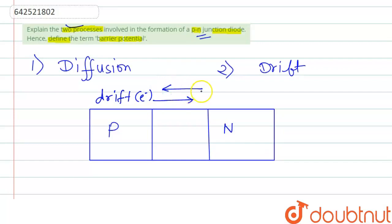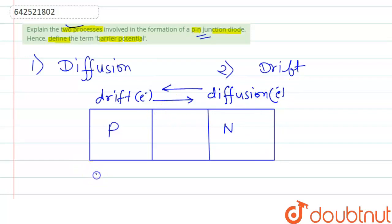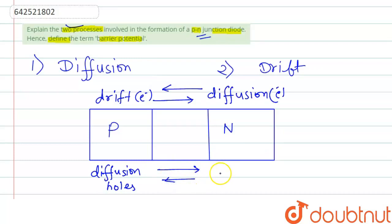And the diffusion of electrons from the N side to the P side. Also, the diffusion of holes from the P side to the N side, and the drift of holes from the N side to the P side.